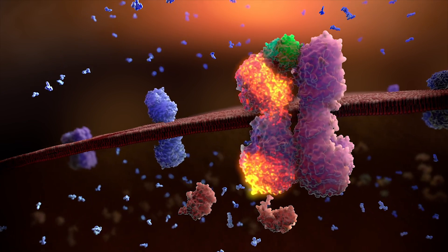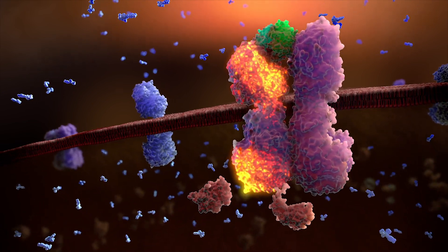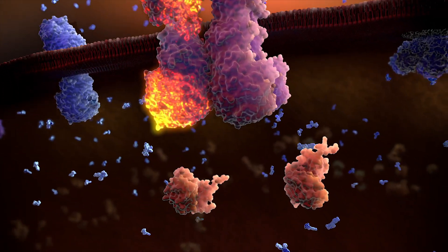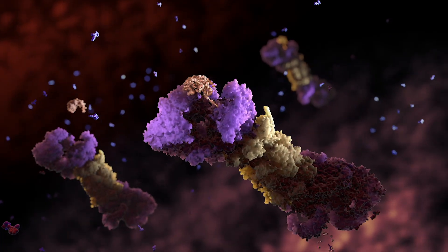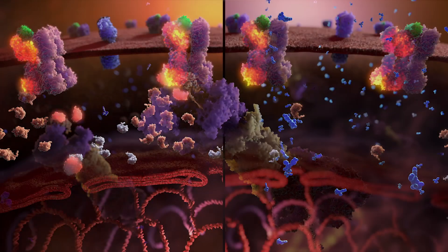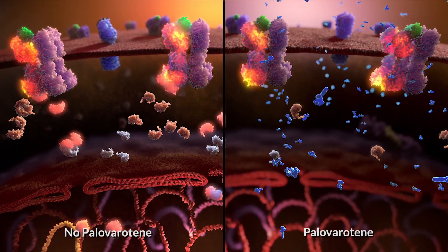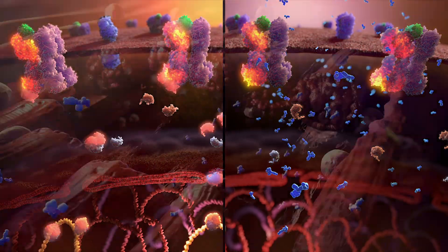In animal models, research scientists have shown that RAR gamma agonists reduce BMP signaling by inhibiting SMAD phosphorylation and by promoting SMAD degradation. As a result, the number of functional SMADs is decreased and BMP signaling is markedly reduced.